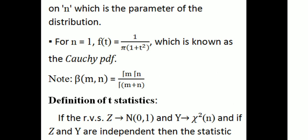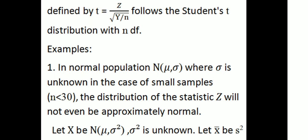For the student t-distribution, the statistic is t = z / √(y/n), where z follows the normal distribution and y follows the chi-square distribution. The combination of these gives the student t-distribution: t = z / √(y/n) with n degrees of freedom.